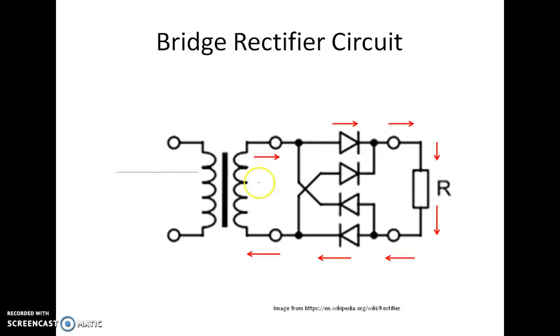This is the bridge rectifier. Again, here we have the transformer and four different diodes arranged in a structure of bridge. In positive half cycle, the polarity which is generated across the secondary is plus minus, giving this diode to be forward biased as well as this diode to be forward biased. And the current flowing through the load is in this direction.